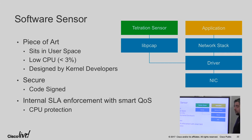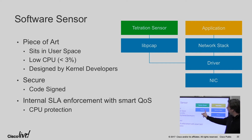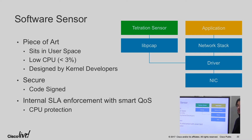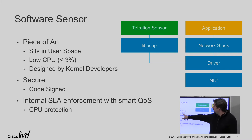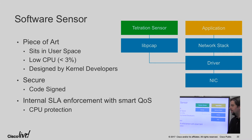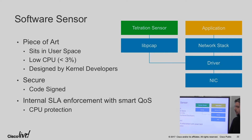For the software sensor, we don't sit in the kernel — that's something we specifically wanted to avoid, because customers told us that if you do that, they won't deploy anything. The way we do it is using the libpcap driver on Linux to pull information out; that's already part of the kernel and already deployed by all our customers. At the same time, we're very low on CPU, because the reputation of sensors is like McAfee on your laptop — 30% CPU idle, drives you mad, and you end up killing it. So CPU usage is extremely low. You define how much you want us to use — say 3% — and we throttle accordingly.